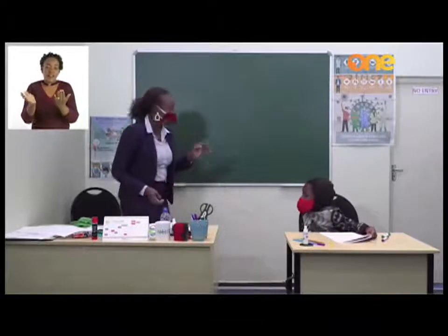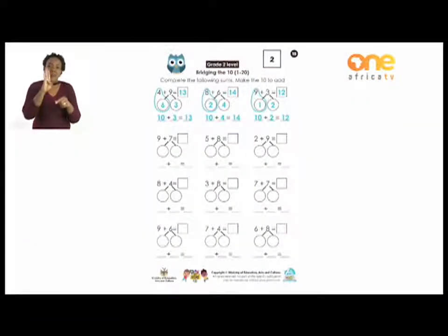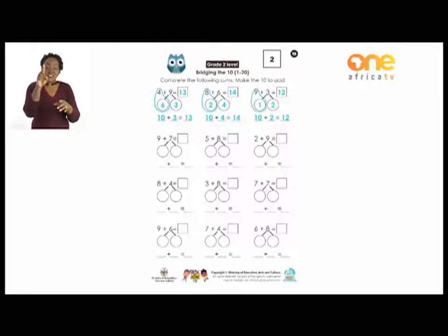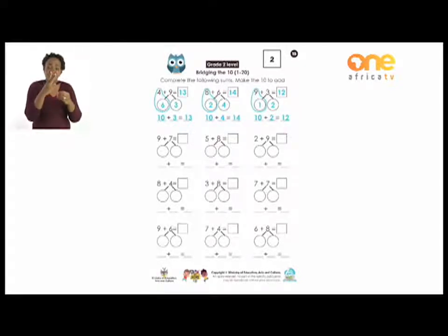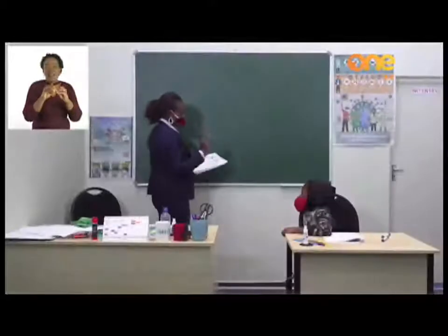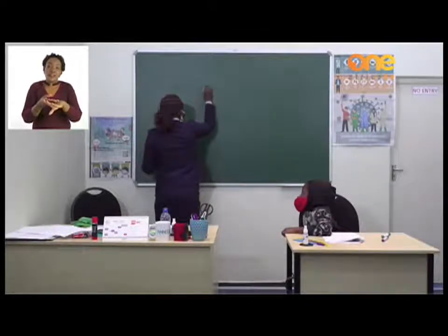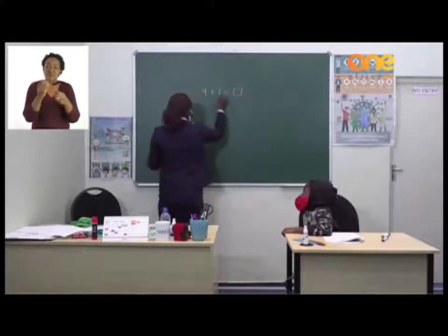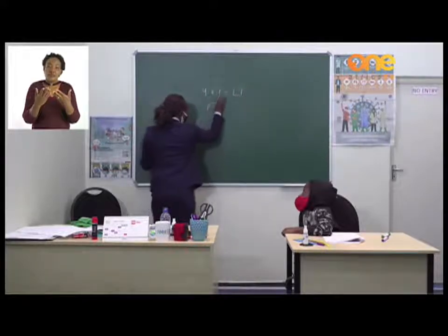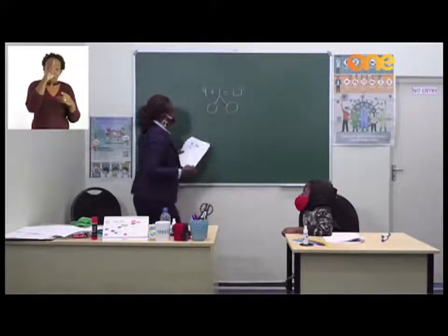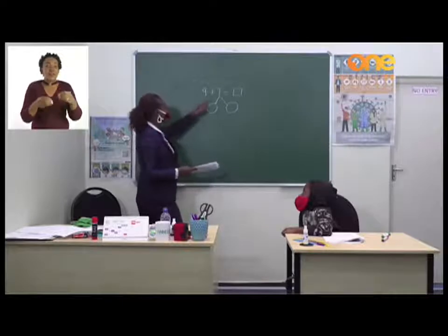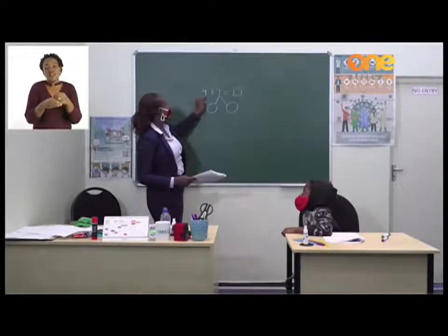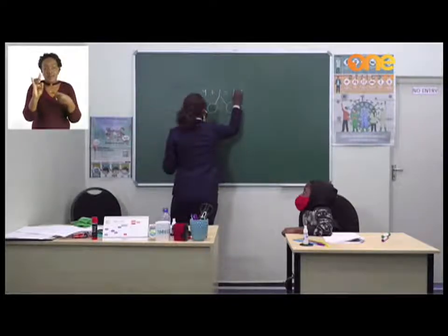Let's now turn to page 15, where we are going to do bridging. Our question is: complete the following sums, make the 10 to add. Bridging means finding the missing number. I'm going to do an example with you. We have 9 plus 7. First, we want to add 9 and 7: 9 plus 7 equals 16.